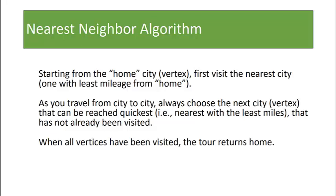In the nearest neighbor algorithm, starting from the home city or vertex, we first visit the nearest city — the one with the least mileage from home. As we travel from city to city we always choose the next city or vertex that can be reached the quickest, meaning the nearest with the least miles that hasn't already been visited. When all vertices have been visited, the tour returns home.